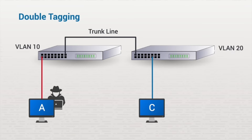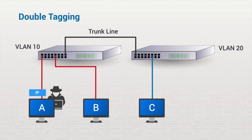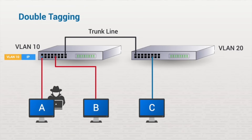For example, both users are on VLAN 10. If user A wants to send data to user B, the frame would include the VLAN tag indicating that the frame was intended for VLAN 10. When the data reaches the switch, the VLAN tag is removed and the packet is sent to its rightful destination.